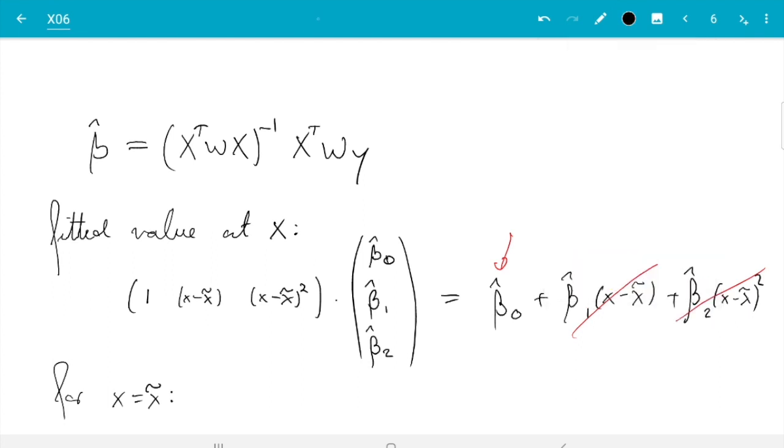So our estimate is m hat h of x twiddle is, I just write it in words for extra clarity, fitted value at x equals x twiddle is beta hat zero.